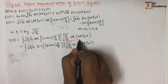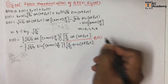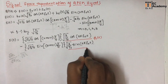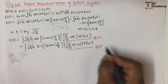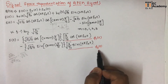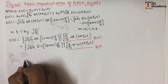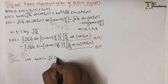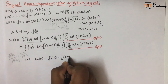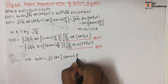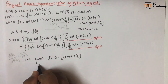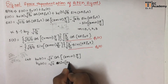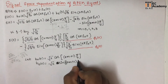Now let us define φ₁(t) = √(2/Ts)·cos(2πf₀t) and φ₂(t) = √(2/Ts)·sin(2πf₀t). Along with this, let us define B₀(t) = √2·cos((2m+1)π/4) and B₁(t) = −√2·sin((2m+1)π/4).